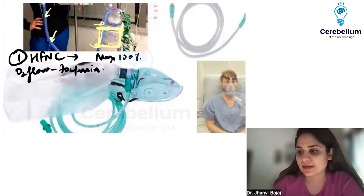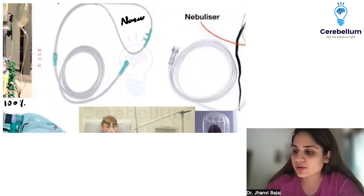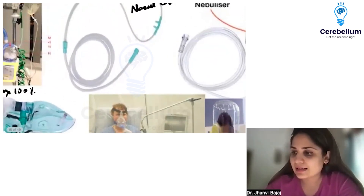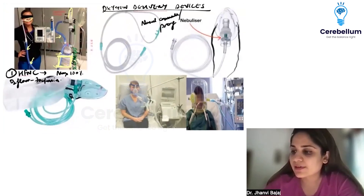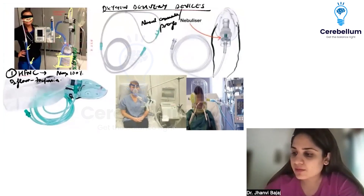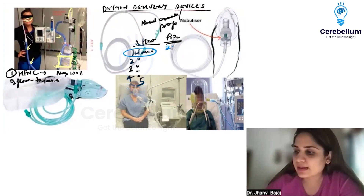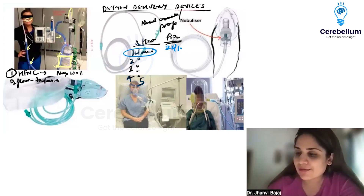Next is the simple nasal cannula or nasal prongs. This was asked in INICET - how much FiO2 does it give? There is a formula: at 1 liter per minute through the nasal cannula, you get 24% FiO2. As you increase flow by 1 liter per minute, FiO2 increases by 4%.